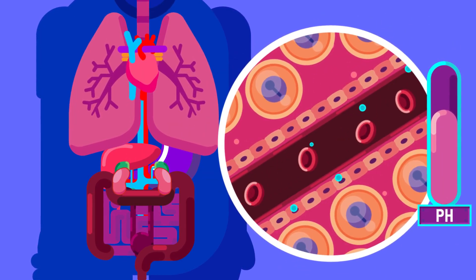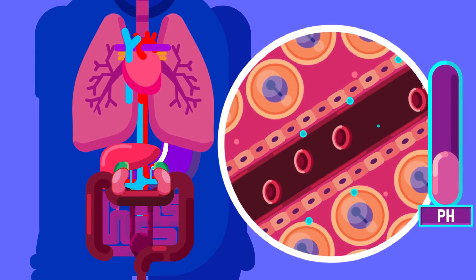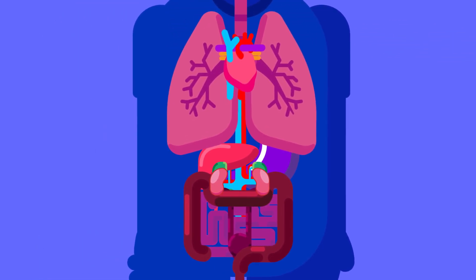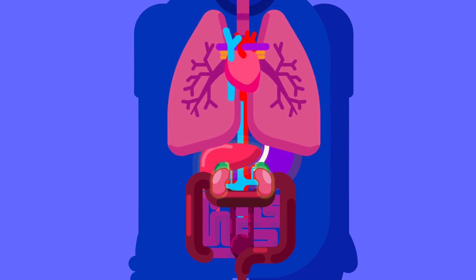The accumulation of wastes in the body interferes with the proper functioning of the cells. Excretory organs in humans are the skin, lungs, liver, and kidney.